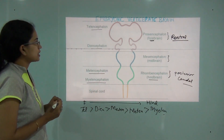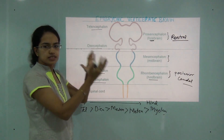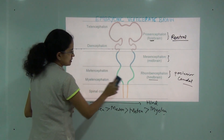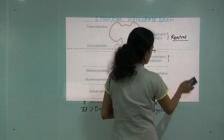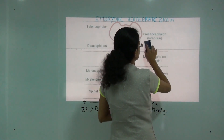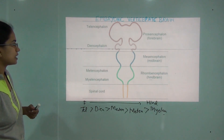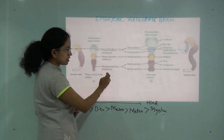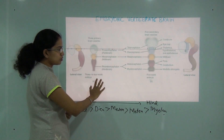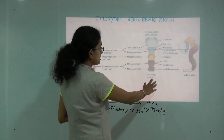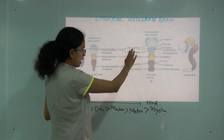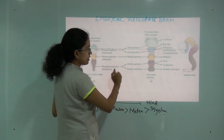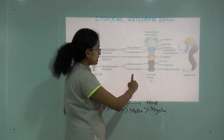Now we will be talking about each of these structures and how they develop. The prosencephalon, mesencephalon, and rhombencephalon develop around 3 to 4 weeks. Around 5 weeks, you have this demarcation where you have the telencephalon, diencephalon, mesencephalon, and then the rhombencephalon divides into metencephalon and myelencephalon.